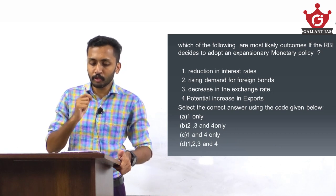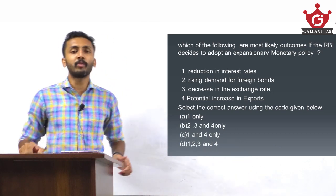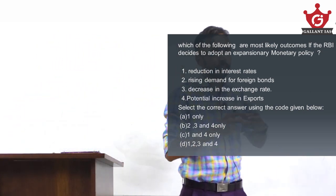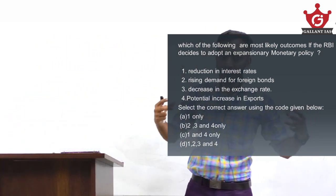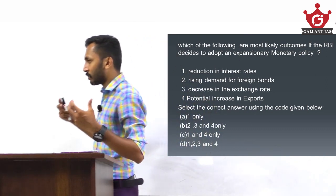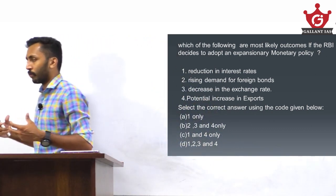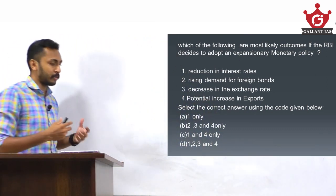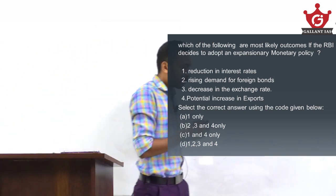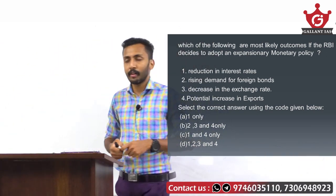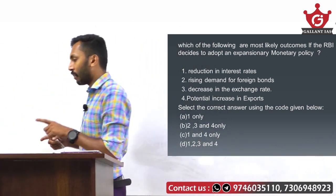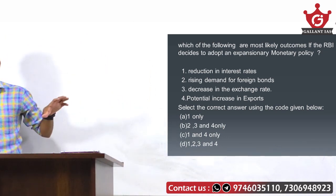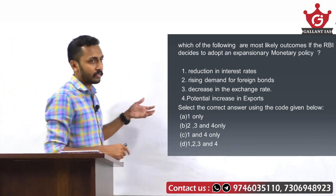What is expansionary monetary policy? The RBI is expanding the money supply in the economy. When RBI expands the money supply, that means RBI is going to reduce the interest rate. When RBI reduces the interest rate, plenty of money will be available in the economy through banks.